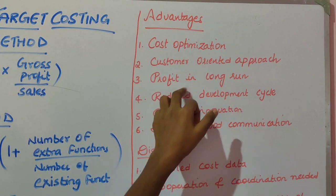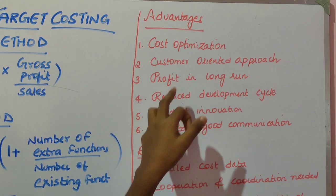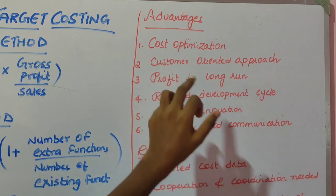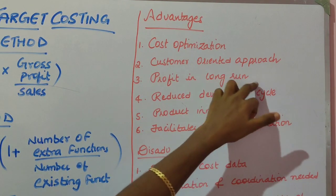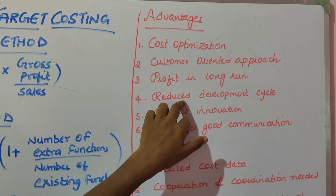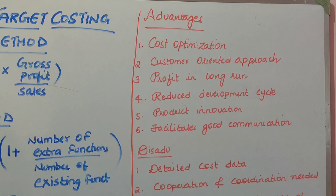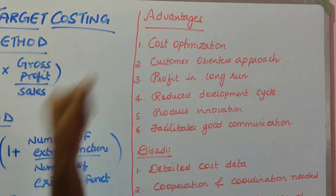The third advantage is profit in the long run. Production is done based on customer specifications and customer price, so short-run profit may be limited, but in the long run the profitability of the organization generally increases due to target costing. The fourth advantage is a reduced development cycle — from the idea generation stage to the market-ready product, the cycle of producing goods is generally reduced when using target costing.